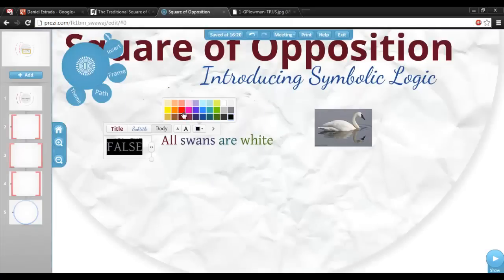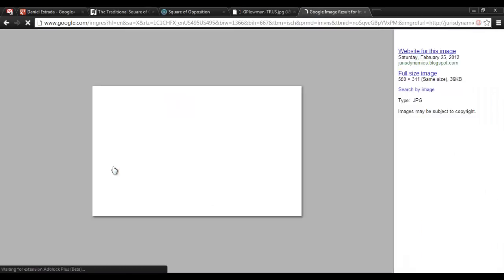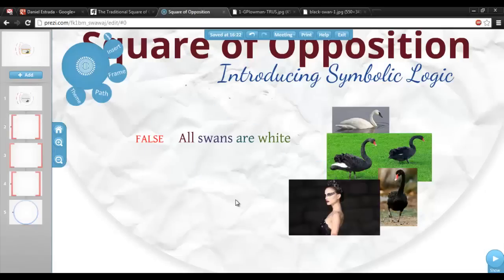This sentence also happens to be false and I can prove it. Here's a black swan, here's another, and here's another. These counterexamples show that the relationship doesn't hold between these two categories. In other words, not all swans are white.